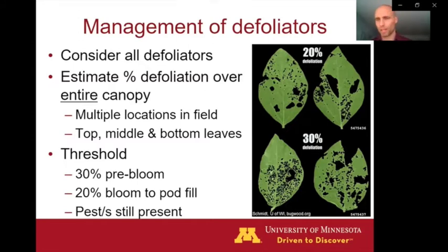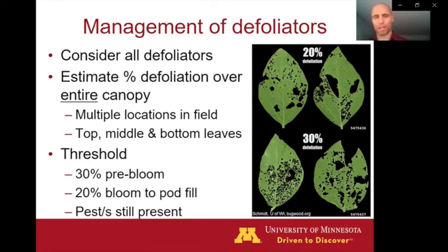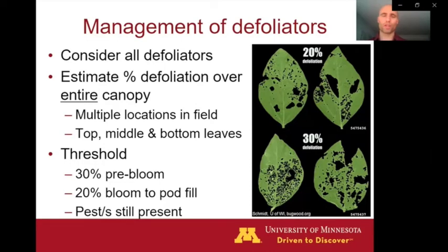We're estimating the percent defoliation for that soybean canopy and then relating that to the thresholds of 30% defoliation before the soybean is flowering — that's the treatable level where you want to line up the insecticide application. And then if your soybean is from flowering to pod fill, that threshold decreases to 20% defoliation. We want to make sure that those pests are still in that field if we're going to apply the insecticide. Sometimes you might get an insect chewing on the plants but they might pupate and leave the field, so if you get those threshold levels of defoliation, just do a quick check — maybe with a sweep net or poking around — to make sure that the culprits are still there so that the insecticide application is worthwhile.